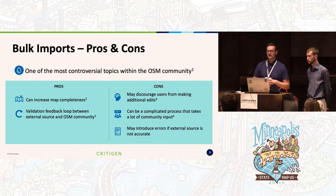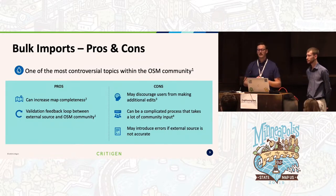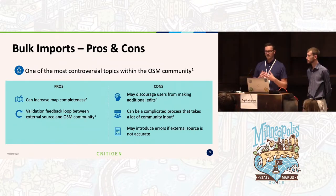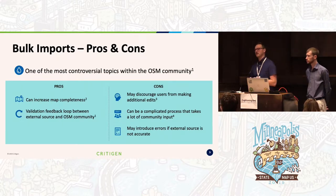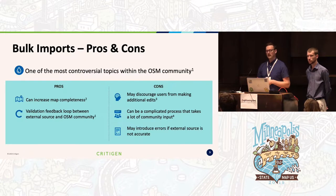Bulk imports have been a pretty controversial topic in OSM for a long time. This is largely because they go against the core model of OSM, which is that individual users manually add verifiable data to the map. There are, however, some pros: they can increase map completeness. There can also be a validation feedback loop — if users in OSM make edits to the imported external data, that external source could potentially incorporate those improvements.